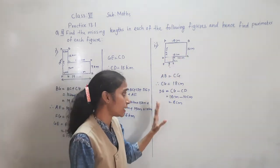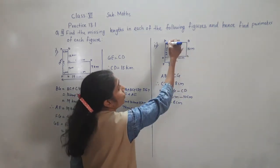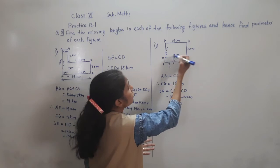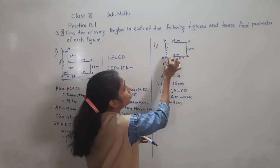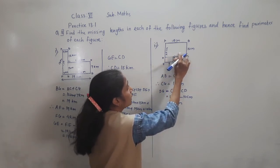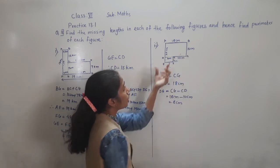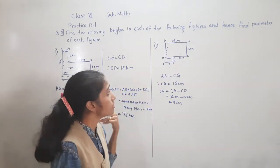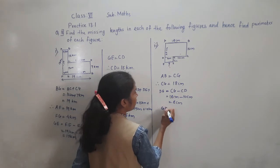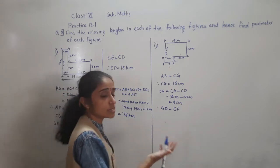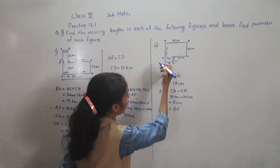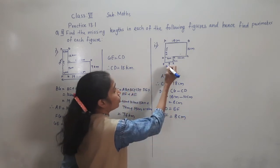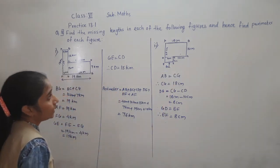If you can solve directly, no need to show all these steps. We know AB = 18 cm, so CG = 18 cm. CD is 10 cm. From 18 subtract 10, you get GD = 8 cm. Now GD is equal to EF because opposite sides of rectangles are equal. DG = 8 cm, therefore EF = 8 cm.